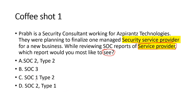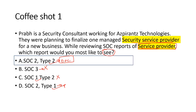SOC 1 covers financial statements, but the question is not about financial statements — it's about reviewing the SOC report of a security service provider. SOC 3 is just a high-level report that won't build confidence, so B and C are removed. We're left with SOC 2 Type 2 and Type 1. Type 2 talks about the effectiveness of a control, so as an auditor or security consultant I'd go for the Type 2 report. Answer: SOC 2 Type 2.